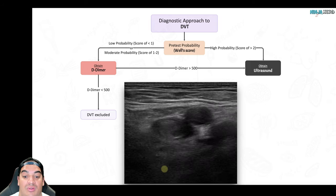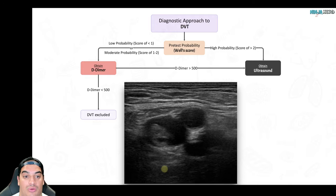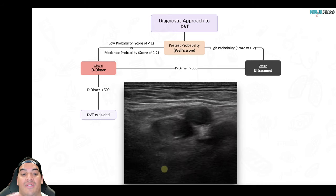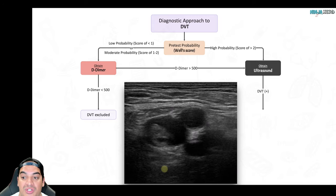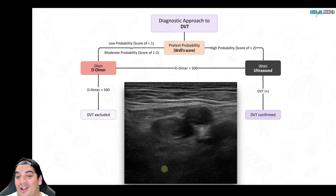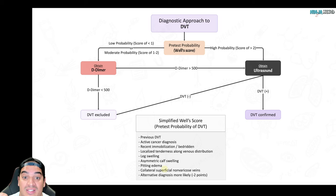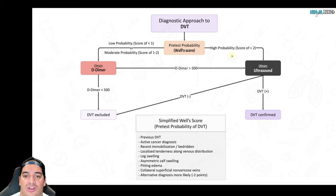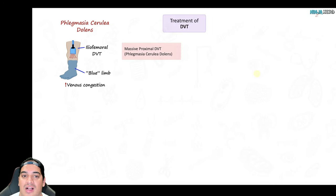If the Wells score is greater than two, you have high probability of DVT — skip the D-dimer and go straight to ultrasound. For low to moderate probability, get a D-dimer; if elevated, proceed to ultrasound. If the ultrasound confirms a DVT, the diagnosis is made and you determine if it's proximal or distal. If negative, DVT is ruled out. Understand the pathophysiology and presentation rather than just memorizing the scoring system.